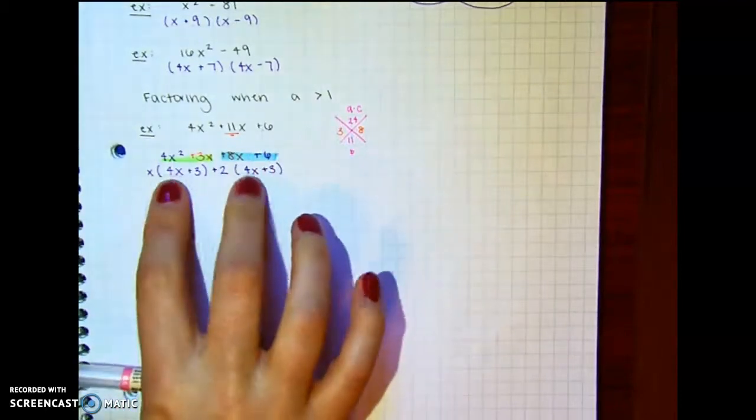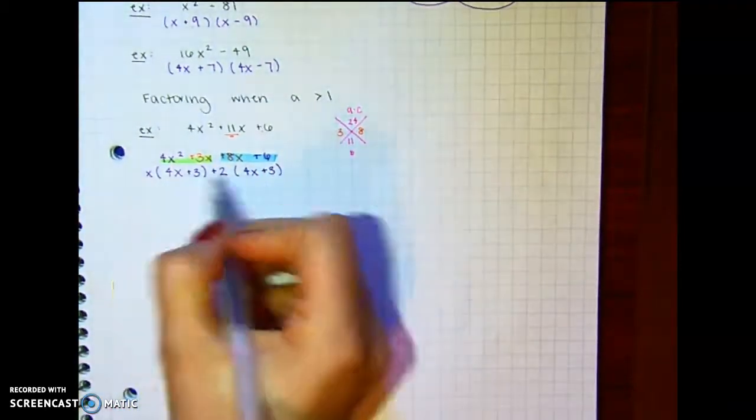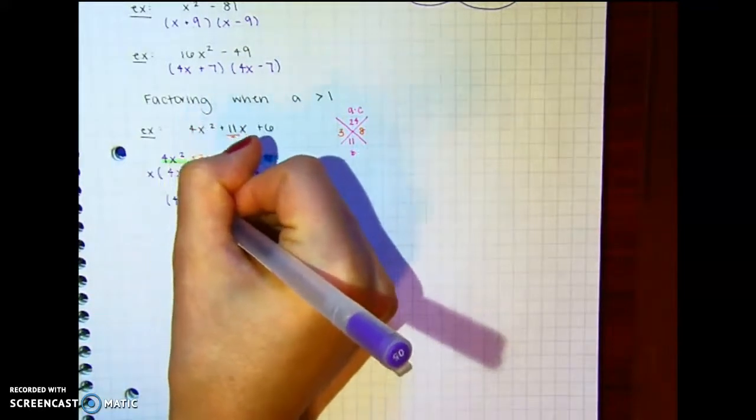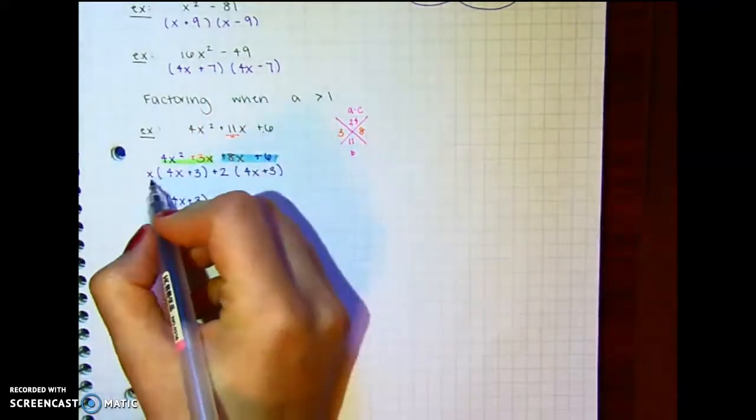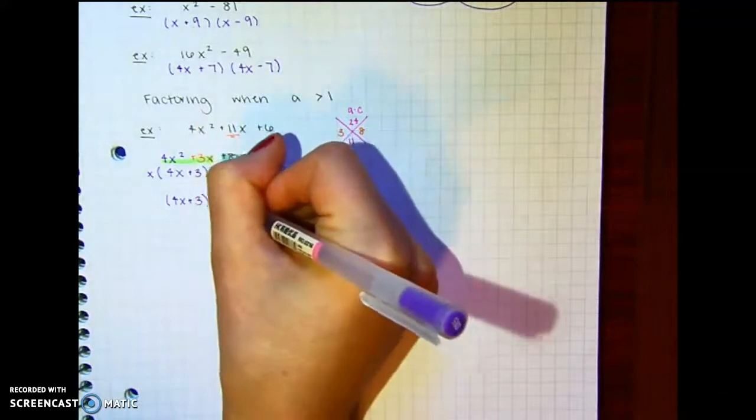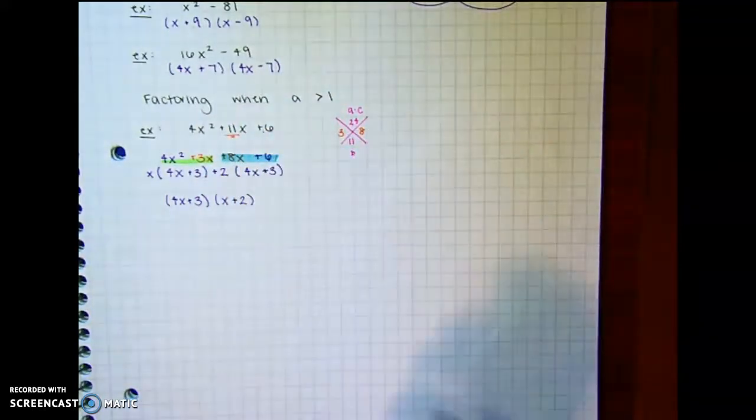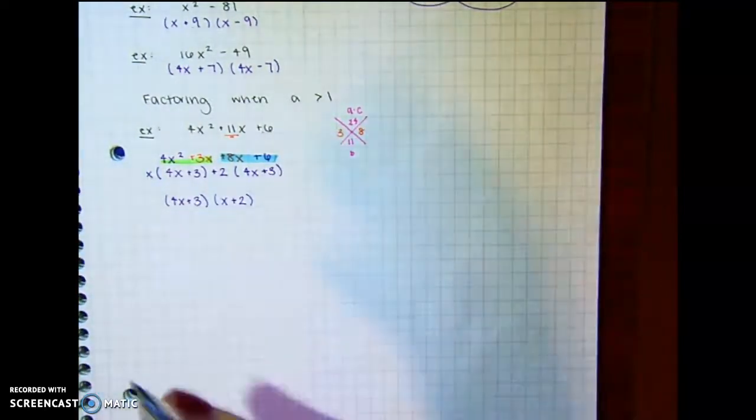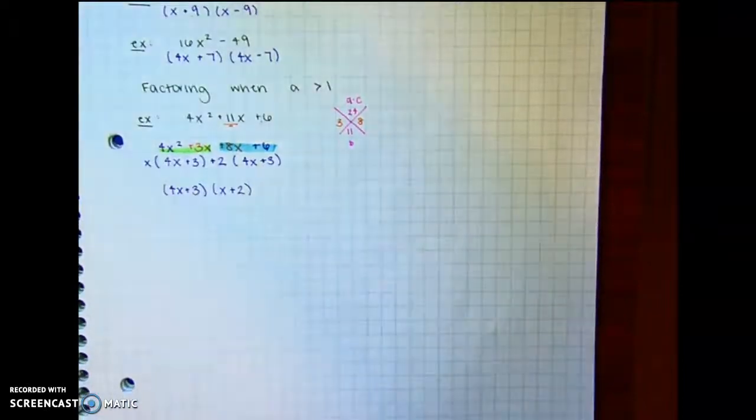So now we look at, okay, what do these both have in common? They both have 4x plus 3. So we factor that out. And what are we left with? We are left with x plus 2. So that's our final answer. And you know it's the final answer because nothing else can be factored out, which is why the first step is always to factor out your greatest common factor.